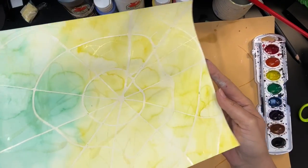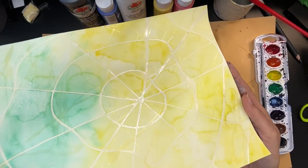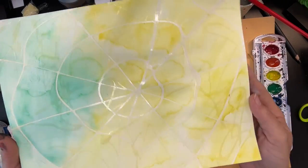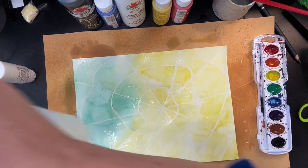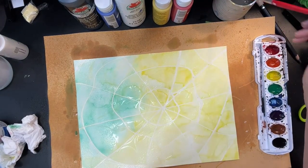The second layer of rubber cement is all dry and now we get to paint it again. So we're going to wet everything down, spritz it on the paper. Make sure our paints are wet as well.